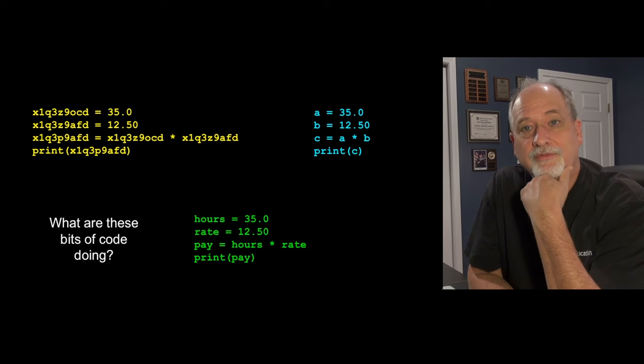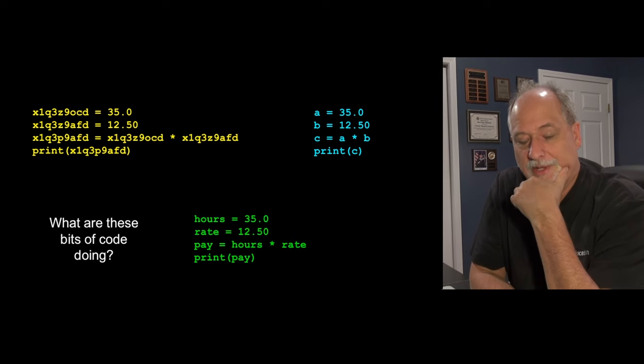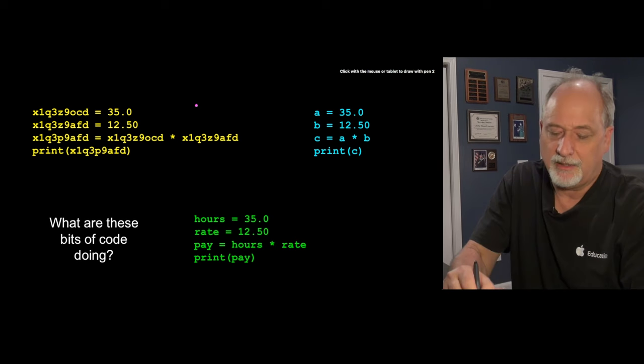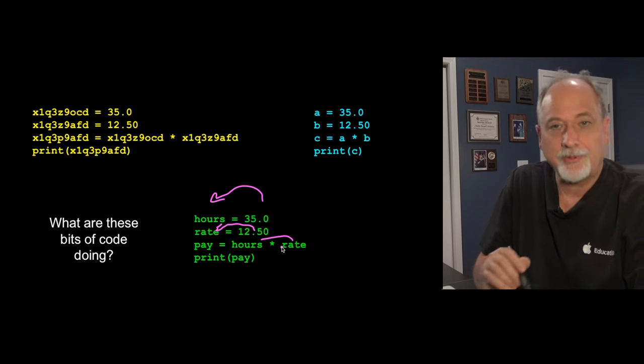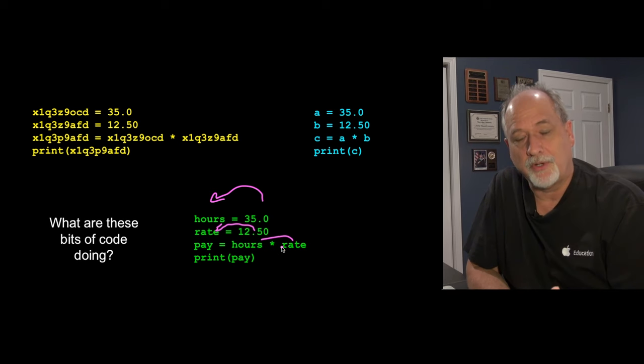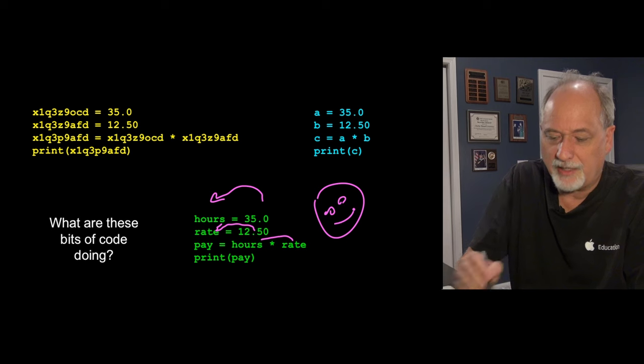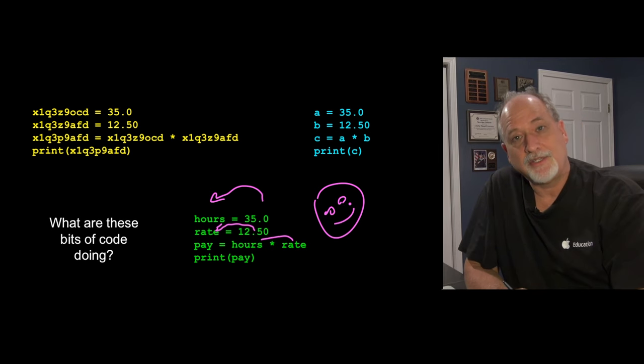Here, on the other hand, is another version of the exact same program. And now you think to yourself, oh, yeah, now I get it. 35 is the number of hours. $12.50 is the rate. And then we're going to multiply the hours and the rate, and come up with the pay, and we're putting out the pay. Now, whoever wrote this program is helping us greatly understand what's going on. And that's good.